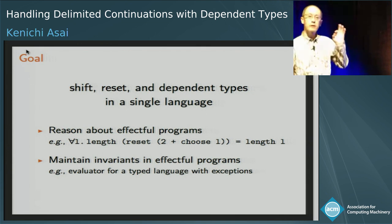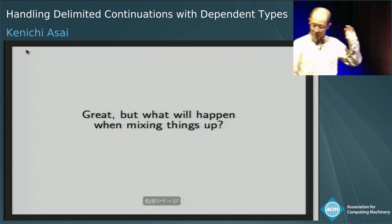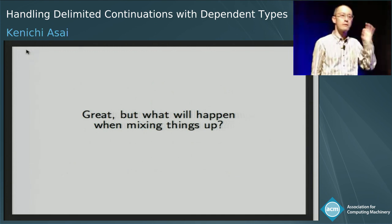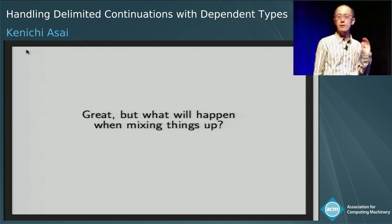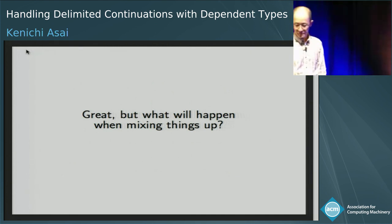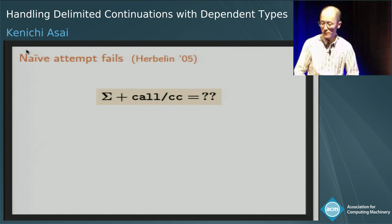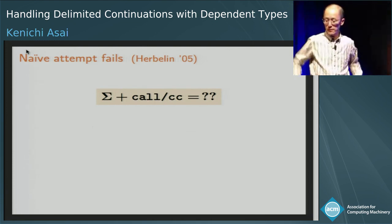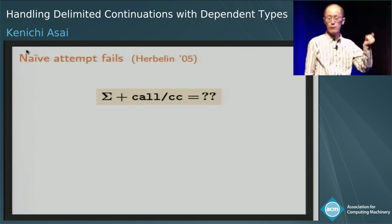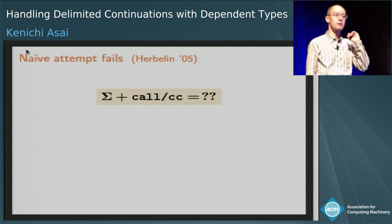There are certainly many things we can do. But what will happen when we mix these two things up? In 2005, Hugo Elbram built a language where we have dependent types and an undelimited control operator called CC.